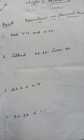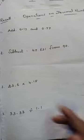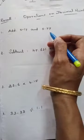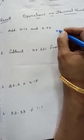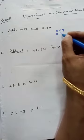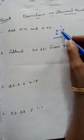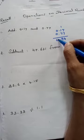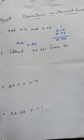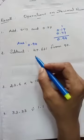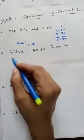First sum: add 0.17 and 0.77. You add like this: 7 plus 7 is 14, write 4, carry 1. 7 plus 7 plus 1 is 15, carry 1. So the answer for this is 0.94.